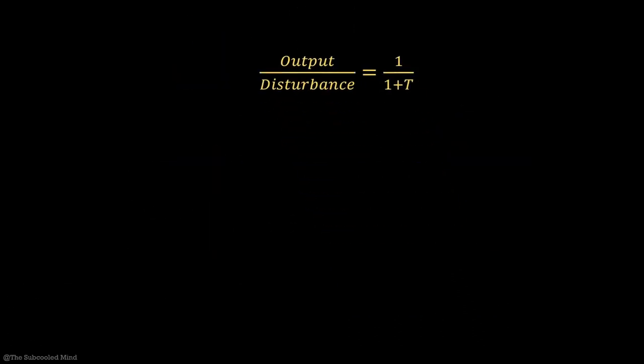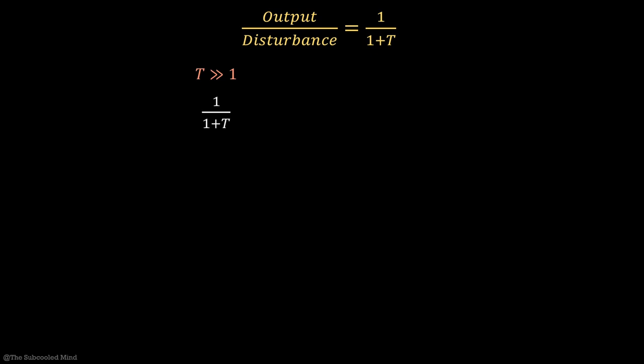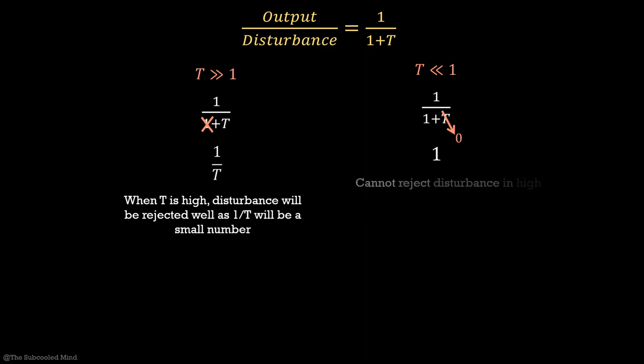We will use the same approximations now. When T is much greater than 1, we can ignore 1 in the denominator and the expression becomes 1 upon T. Or in other words, if low frequency gain is high, then the disturbance will be rejected well. When T is much less than 1, the expression reduces to 1 or 0 dB which means that the system is capable of rejecting only low frequency disturbances.